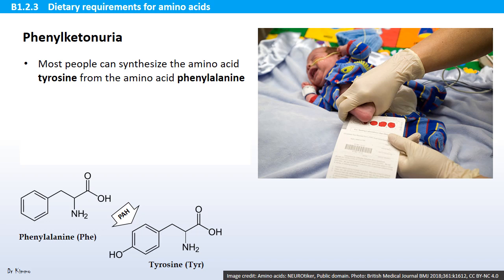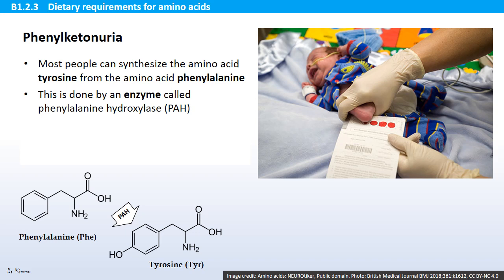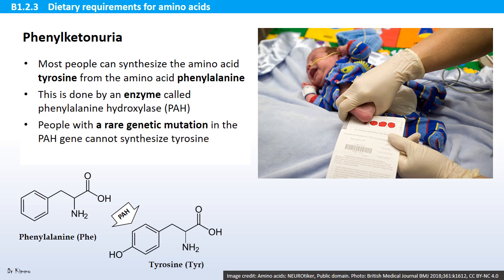Phenylketonuria is a condition associated with the synthesis of amino acids. Most people can synthesize the amino acid tyrosine from the amino acid phenylalanine, done by an enzyme called phenylalanine hydroxylase, or PAH. However, people with a rare genetic mutation in the PAH gene cannot synthesize tyrosine, and they have phenylketonuria, or PKU.